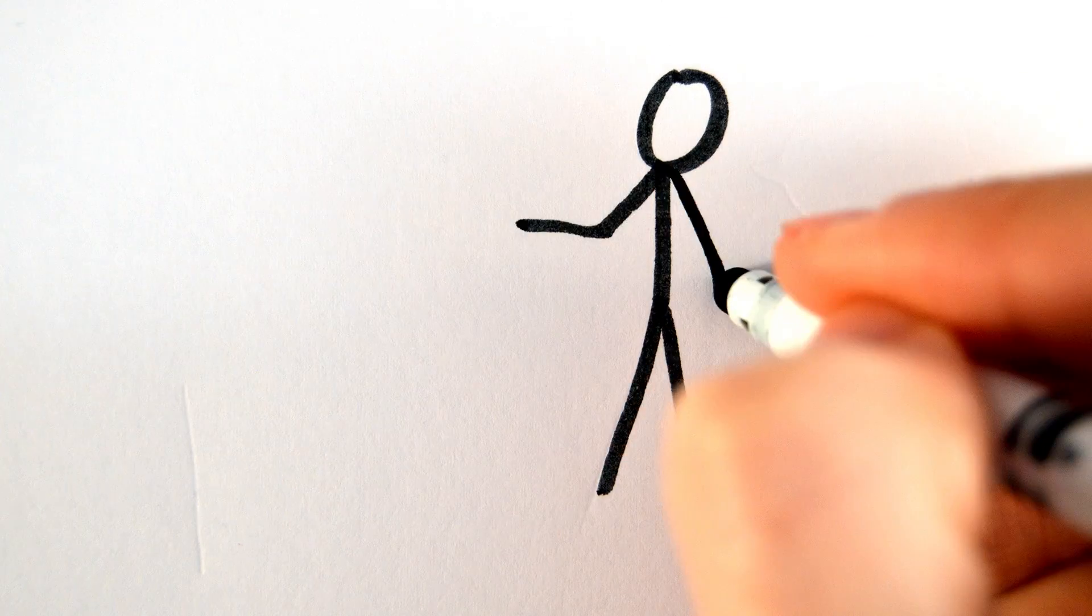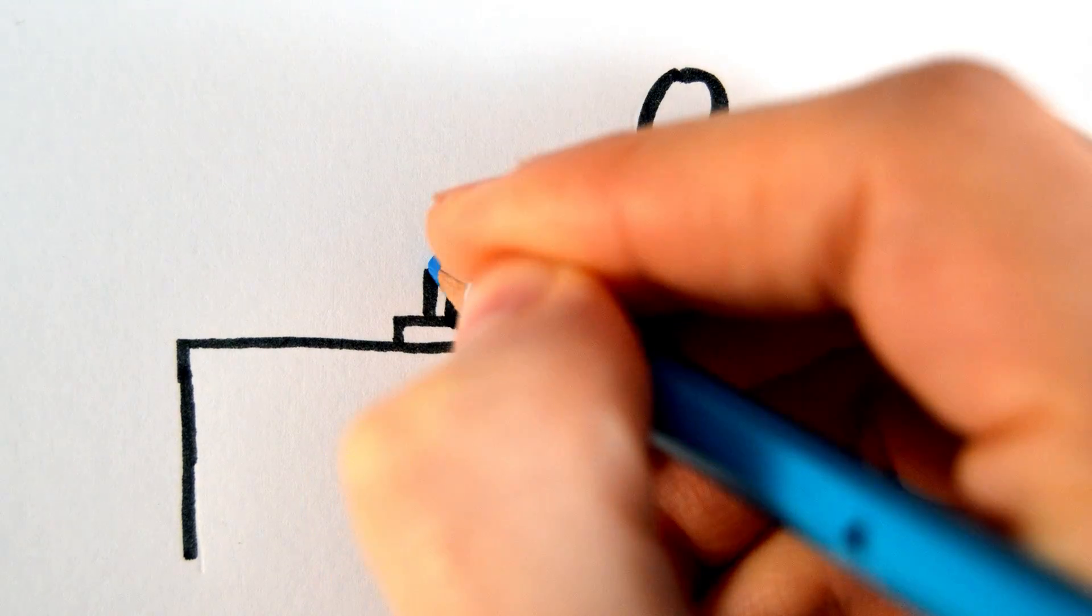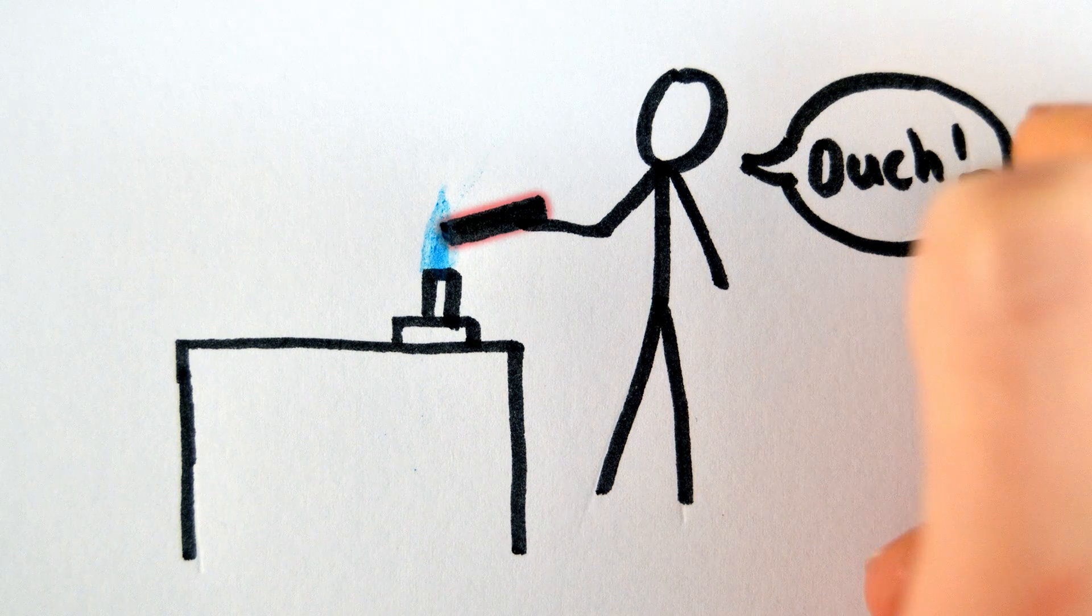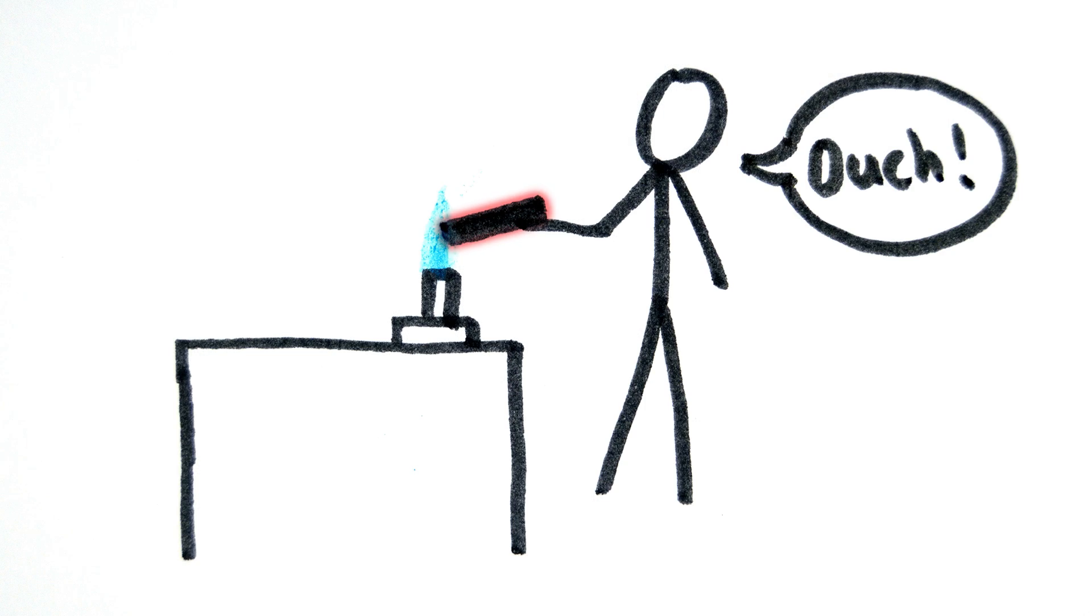Heat always moves from a region of higher temperature to a region of lower temperature. This will continue to flow until both bodies have the same temperature. At this point it is said to be in thermal equilibrium.